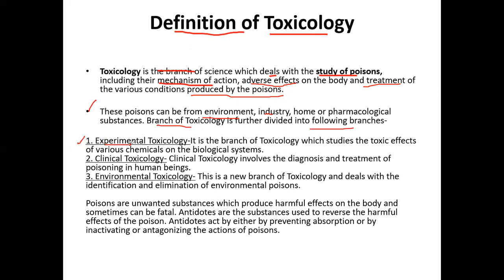The branches of toxicology include experimental toxicology, which studies toxic effects of various chemicals on biological systems. Clinical toxicology — our relevant topic — deals with the diagnosis and treatment of poisoning in human beings, where we first identify the cause of poison and then treat the patient. Environmental toxicology involves the identification and elimination of different types of environmental poisons.